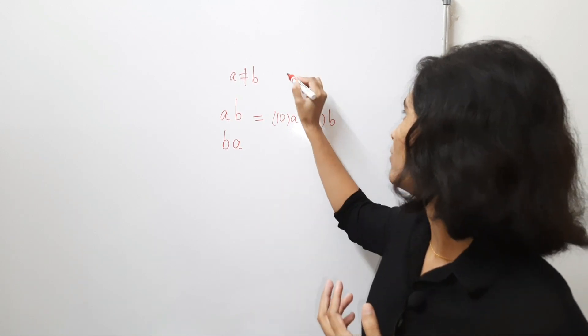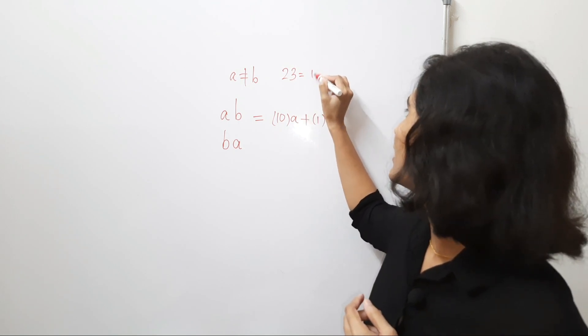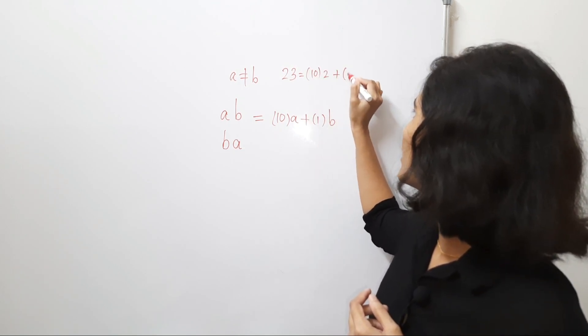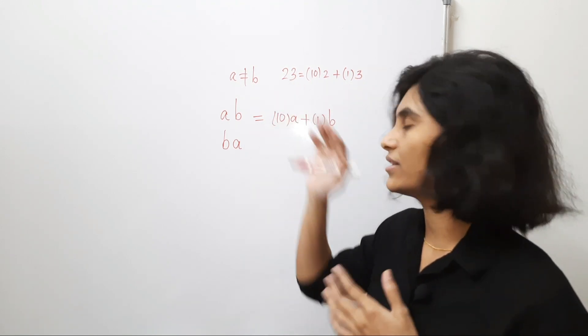For example, suppose you have a number 23. Then, you can write this number as 10 times 2 plus 1 times 3, right? 20 plus 3 is 23.